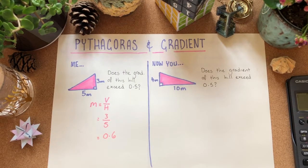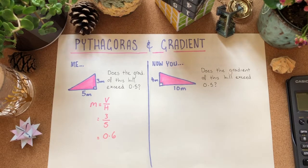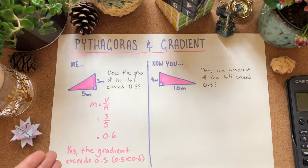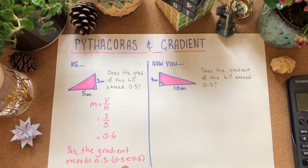So have we answered the question? No. We've done a sum, we've shown that the gradient is 0.6 but to answer the question we have to put in yes the gradient exceeds 0.5 and then we'll just say that 0.5 is less than 0.6.